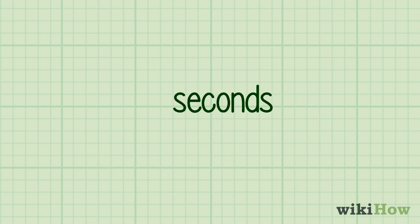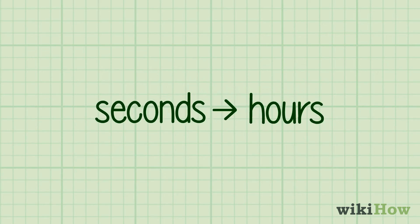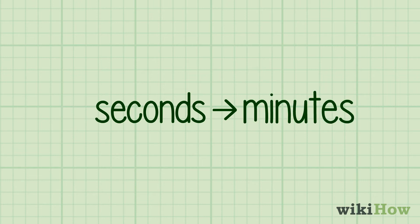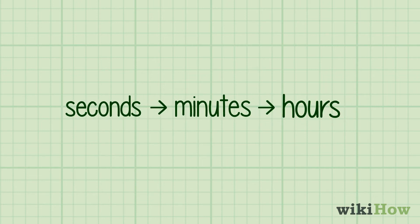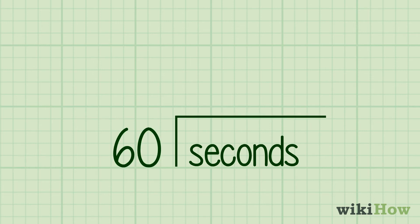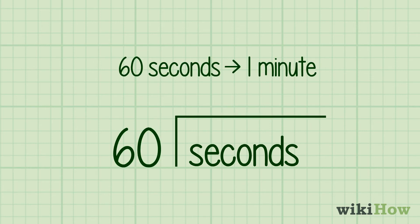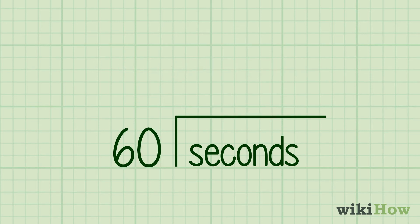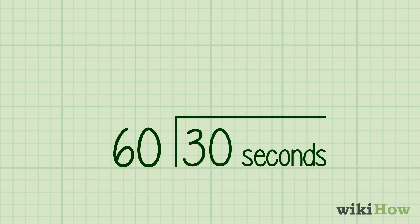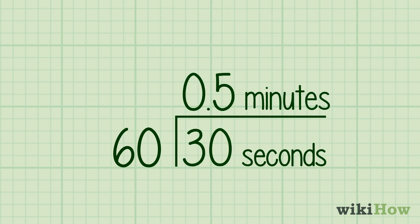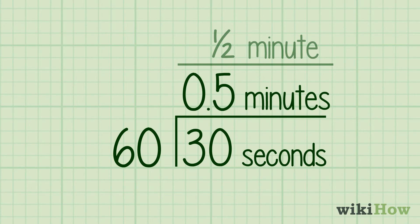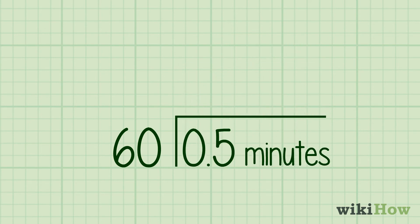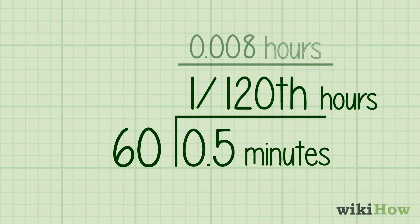Another way to convert from seconds to hours is to convert seconds into minutes first, then convert the minutes into hours. Start by dividing your number of seconds by 60, since there are 60 seconds in a minute. For instance, if you have 30 seconds, divide by 60 to get 0.5 minutes, or half a minute. Divide 0.5 by 60 again to get 1/120th of an hour, or approximately 0.008 hours.